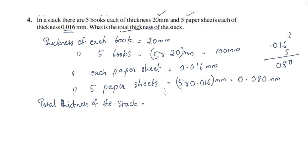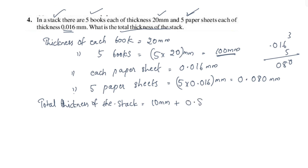The total thickness of this stack is equal to 5 books plus 5 paper sheets thickness. That is 100 mm plus 0.080 mm, which equals 100.080 mm. So total thickness of the stack is 100.080 mm.